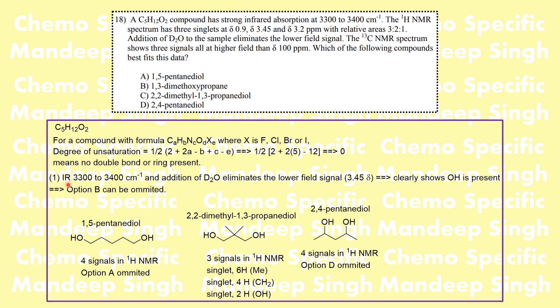If we calculate the double bond equivalence — the degree of unsaturation — it is zero. That means there is no double bond or ring present in the molecule, so it has to be an aliphatic system. Based on these observations we can clearly omit option B because it is an ether — that is not possible.